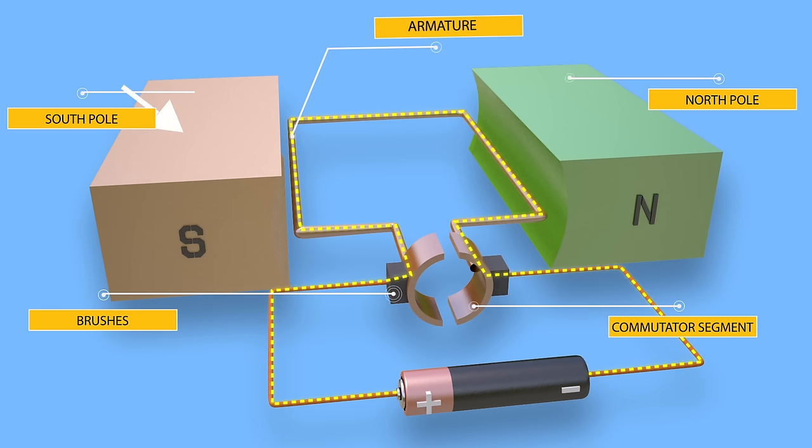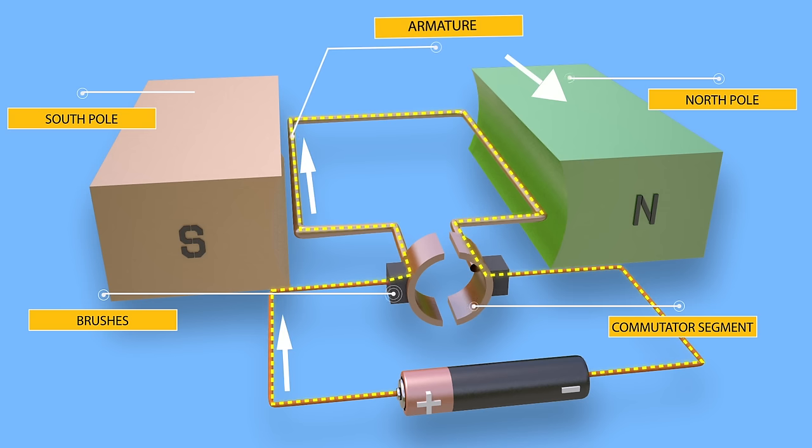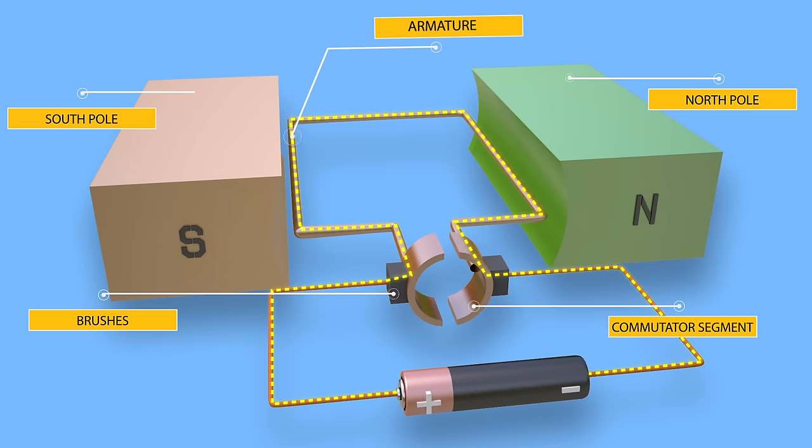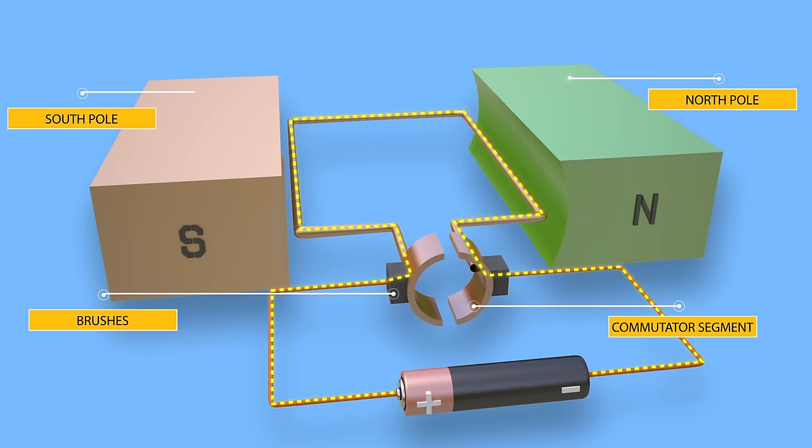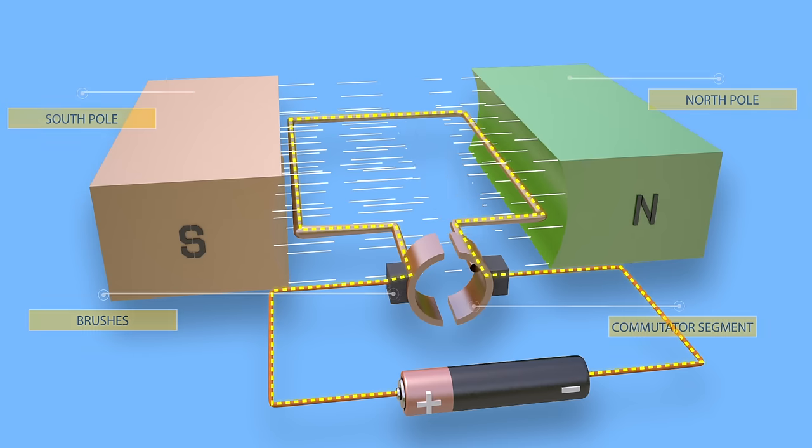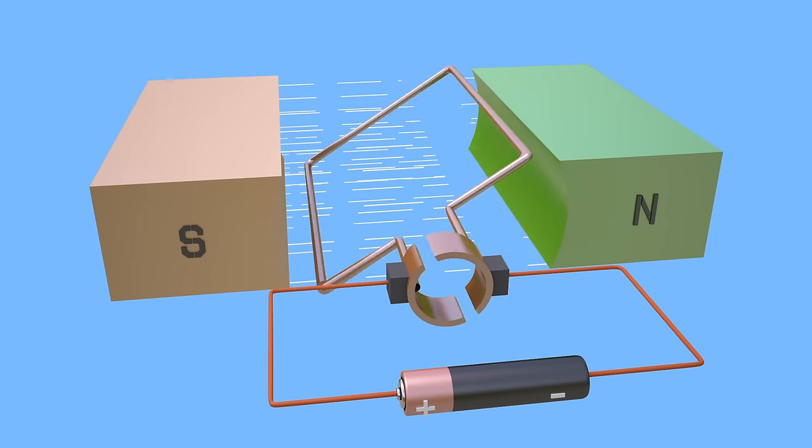As we see in the model, the north pole of the magnet is placed near the left side, and the south pole is placed near the right side of the turn. Current in the left side flows inward, and current in the right side flows outward. Since the conductors are carrying current and are placed in a magnetic field, both of them experience mechanical force.